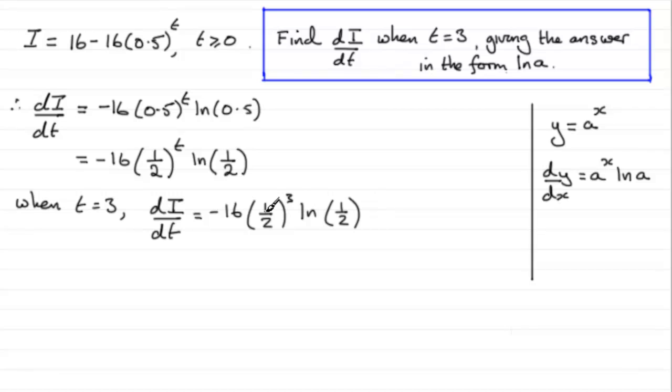So what is a half cubed? Well, a half cubed is 1 over 2 cubed, 1 over 8, and so we've got 1 eighth times 16 is going to be 2. So we have minus 2 natural log of a half.